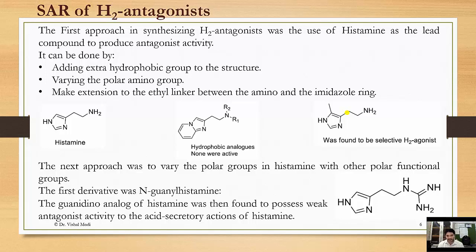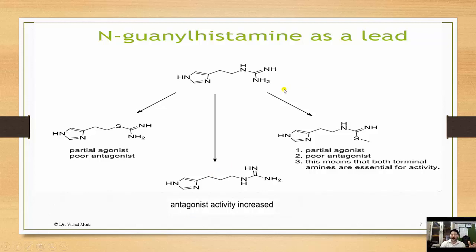The next approach was to vary the polar groups in histamine with other polar functional groups. The first derivative developed was N-guanyl histamine, where at the polar amino group there is an attachment of a guanidine group, which is highly basic and polar. The guanidino analog of histamine was found to possess partial antagonist activity to the acid-secretory action of histamine, serving as a lead molecule.